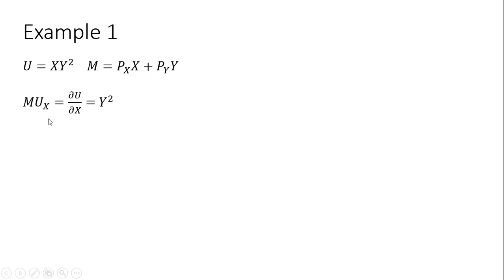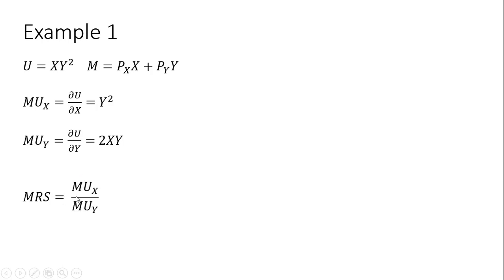We're going to get the marginal utility of good x first, by taking the partial derivative of the utility function with respect to x — we get y squared. For the marginal utility of good y, we bring down the 2 from the exponent, leaving 2xy. Forming the marginal rate of substitution — MU of x divided by MU of y — and setting it equal to the ratio of prices p_x over p_y at the utility maximum.